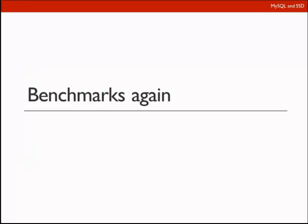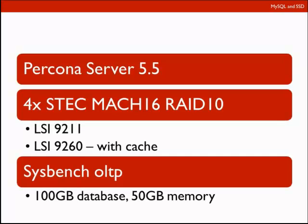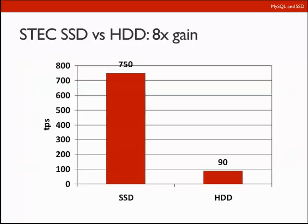In Percona Server, we provide additional tuning parameters to get even better performance on Flash. If you're still on version 5.1, look at Percona Server 5.1, which comes with extra InnoDB improvements. In this benchmark using Percona Server 5.5 comparing Flash SLC drives versus hard drives, with Sysbench OLTP workload, 100 GB of data, and 50 GB of memory available for the InnoDB buffer pool, out of the box you can expect about eight times performance improvement with Flash over hard drives.